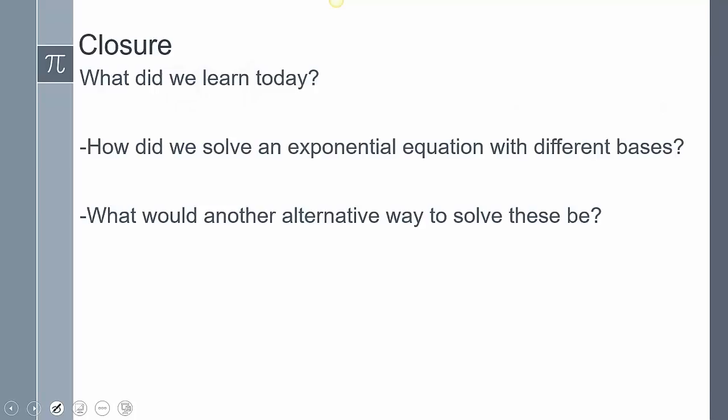Alright, so what did we learn today? We talked about the power property of logarithms and how to solve exponential equations with different bases. How did we solve an exponential equation with a different base? We took log to both sides. We could also take ln to both sides. I'm not going to talk about that just yet. But we took log to both sides, and that allowed us to use that property of logarithm. We moved that to the front. What would another alternative way to solve these be? To be continued. This does conclude our lesson. If you have any questions, please leave them in the comments.